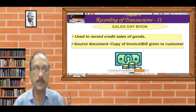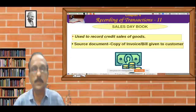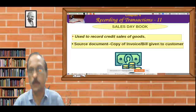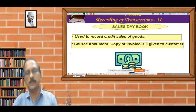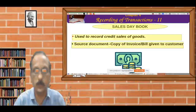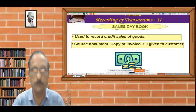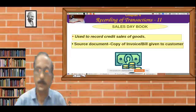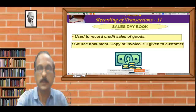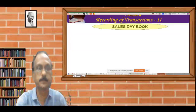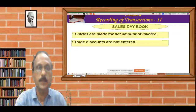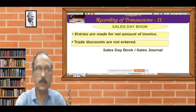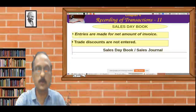That is the source document for recording the sales day book or credit sale of goods. To record the credit sale of goods. Entries are made for the net amount of invoice. This is the net amount of invoice — the net amount.